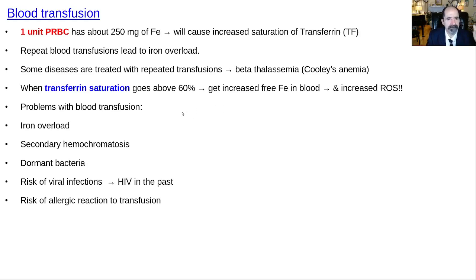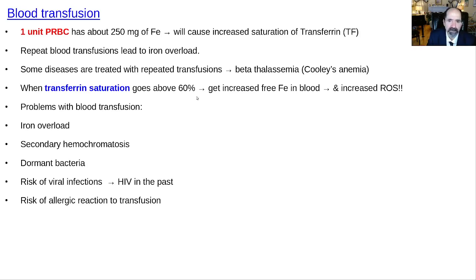Blood transfusion overloads a person with iron — about 250 milligrams per unit of packed red blood cells. Patients receiving multiple transfusions get iron overloaded, which is called secondary hemochromatosis (as opposed to primary hereditary hemochromatosis). When transferrin saturation gets above 60%, you start getting free iron in the blood with lots of reactive oxygen species problems. There are also risks of allergic reaction and viral infection from transfusions, though HIV contamination is no longer common.